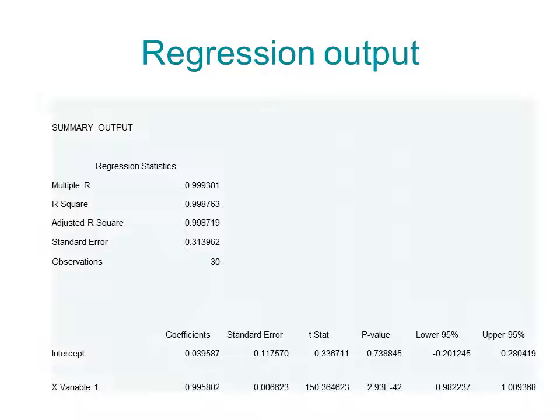We also have something called p-value which tells us what's the probability that the coefficient should be there, that what we are getting is just noise. And for the intercept it's telling us that there is about 74 percent chance that the true function doesn't have any.